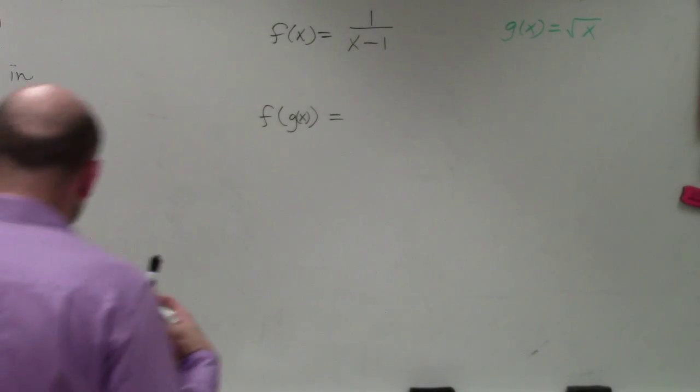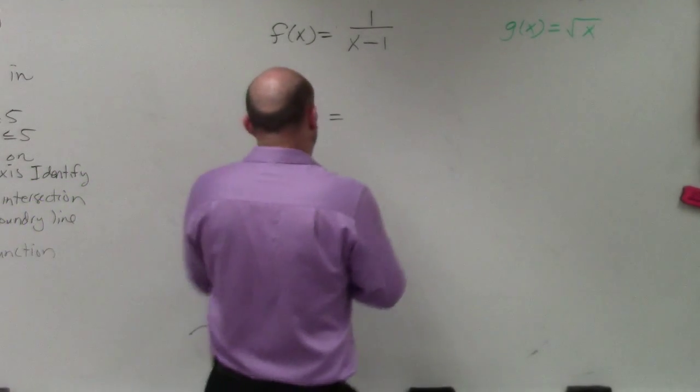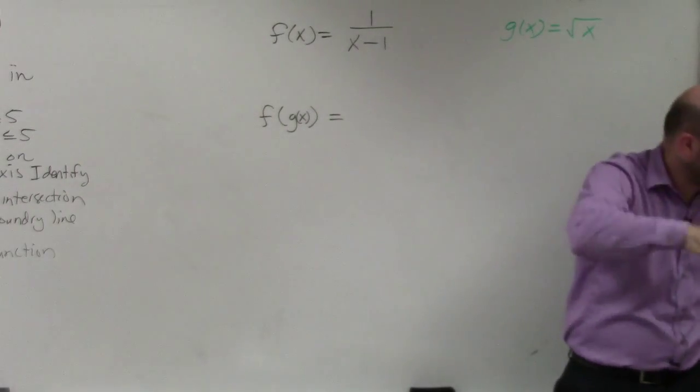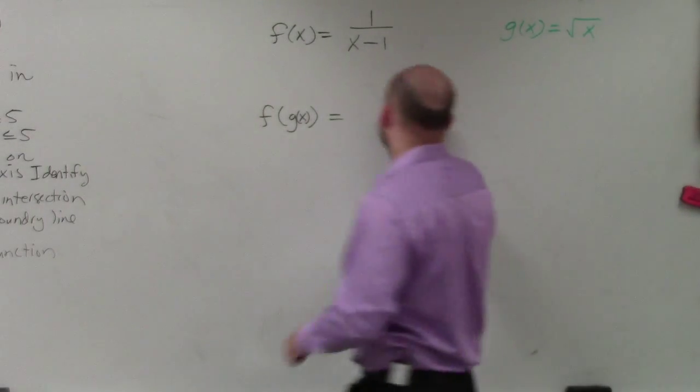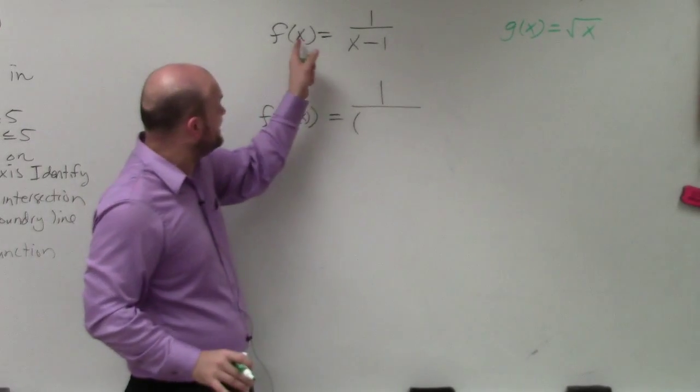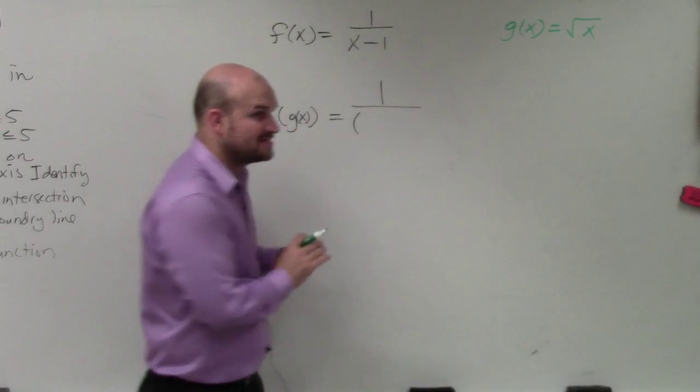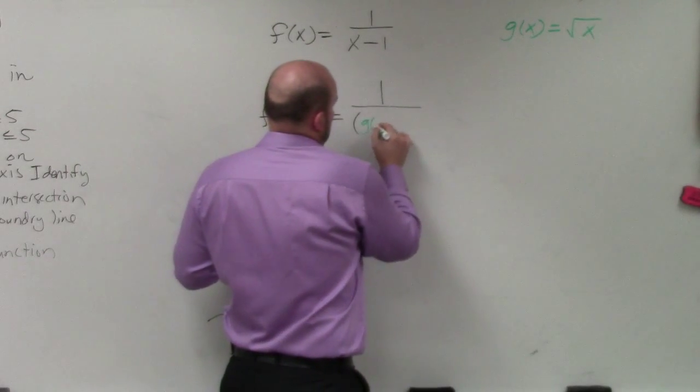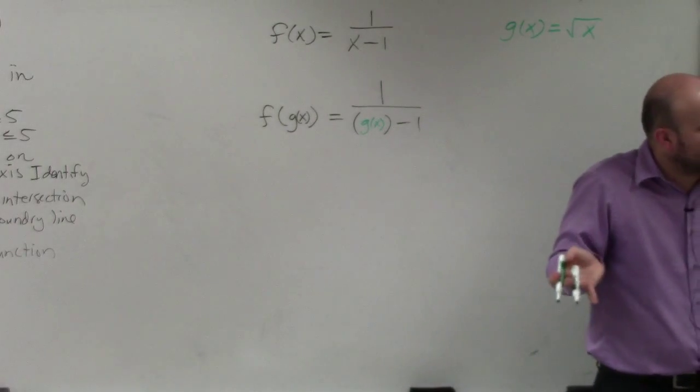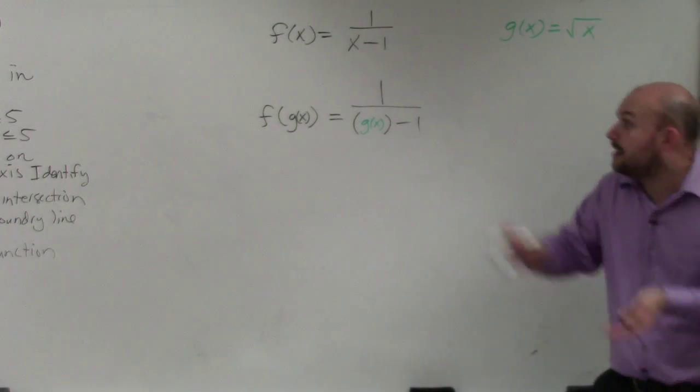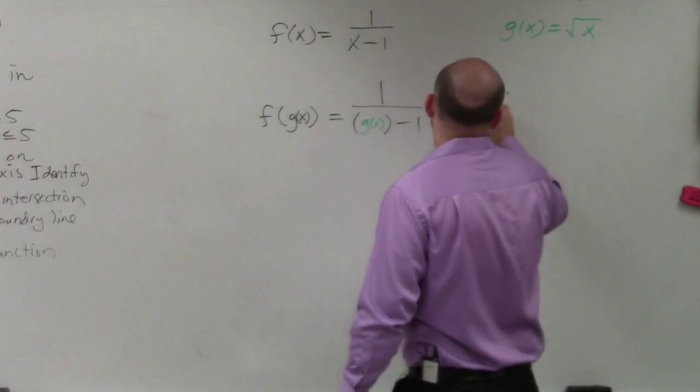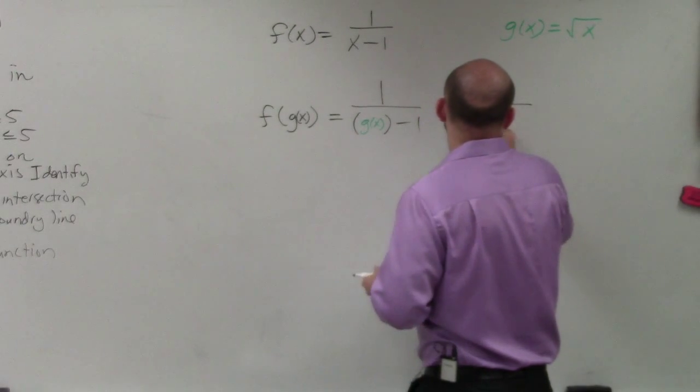Again, you're just applying substitution. We're going to plug the g(x) function as the input value for the f(x) function. So it's basically 1 over, instead of x, we're now replacing x with g(x). Does everybody see what I did? I just replaced the input value with g(x). What does g(x) equal? g(x) equals the square root of x.